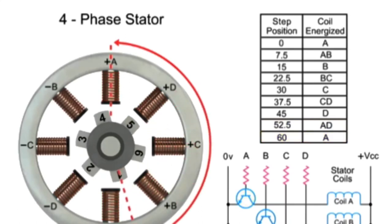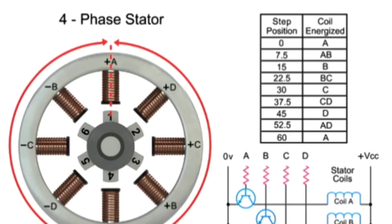As you can see in this example, 48 steps are required to make a full rotation at 7.5 degree increments.